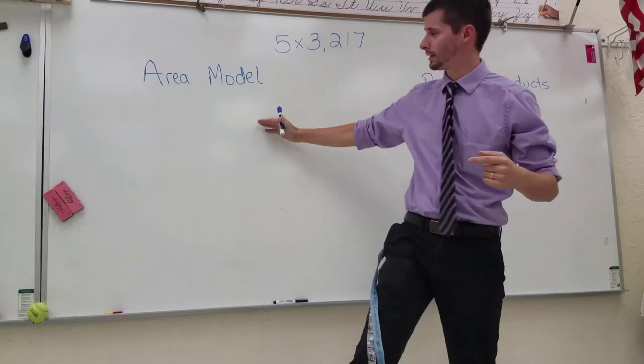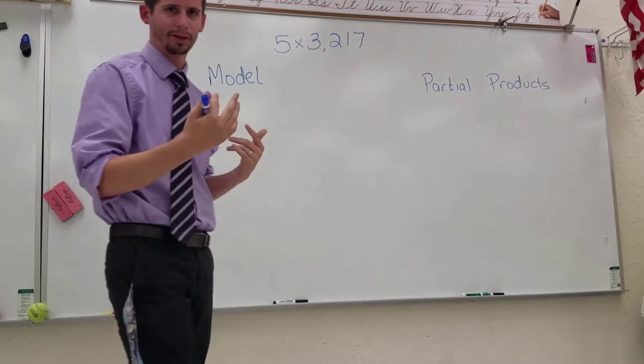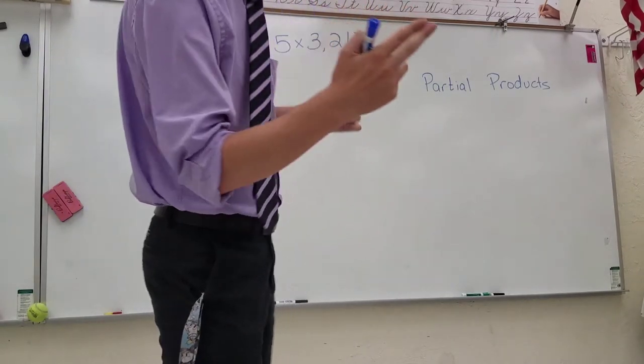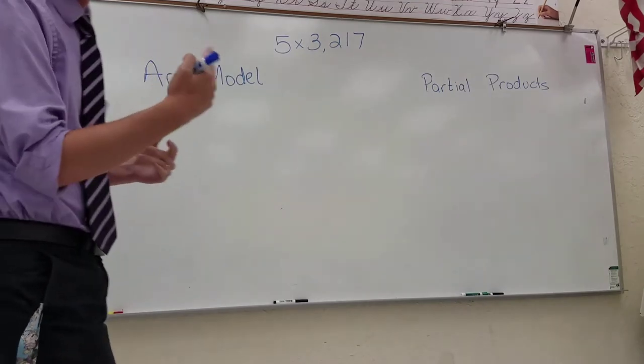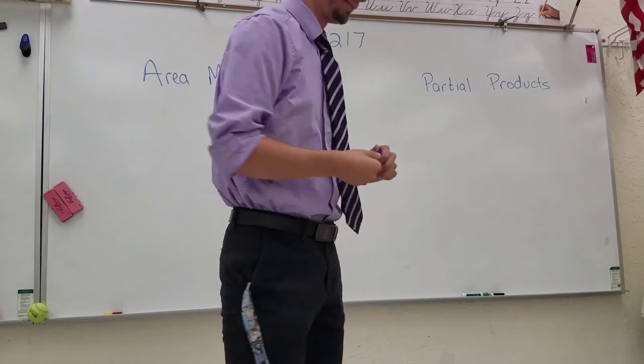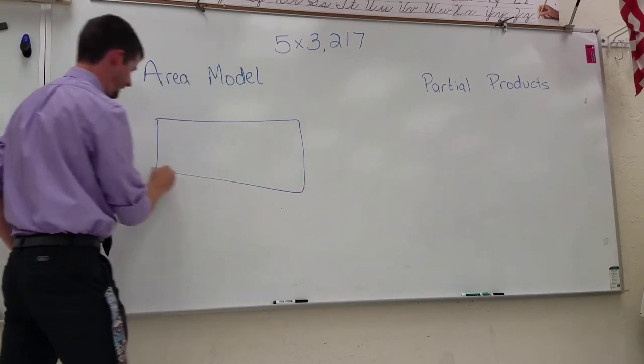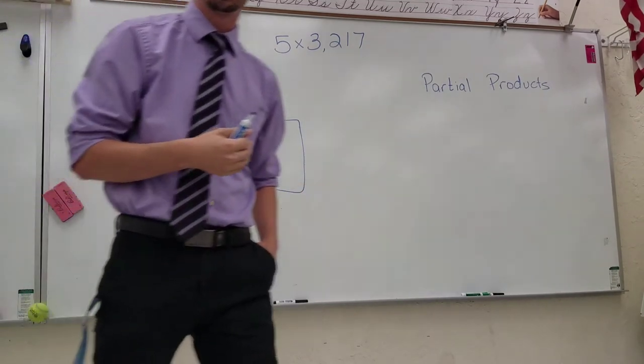Hey parents, I just wanted to show you how we can solve another multiplication problem using an area model and introduce partial products. For today we're going to do a one digit by a four digit number. We're going to do 5 multiplied by 3,217.